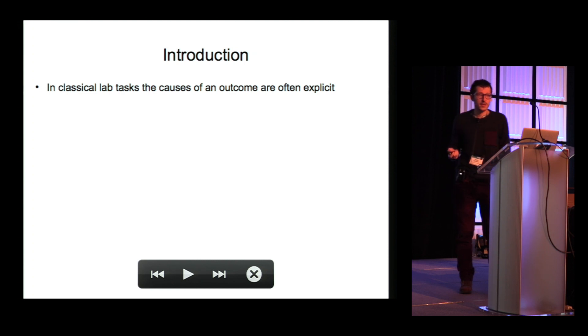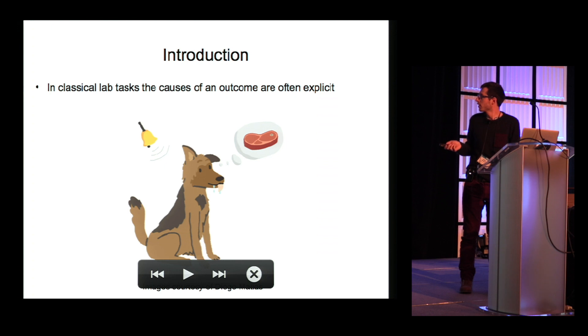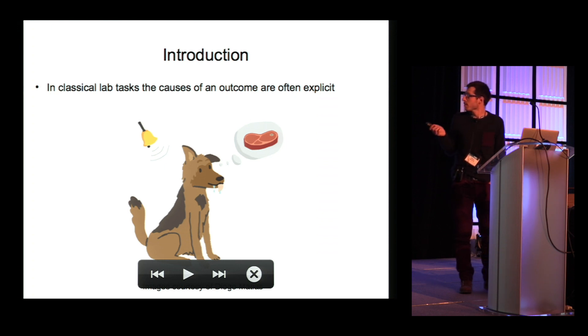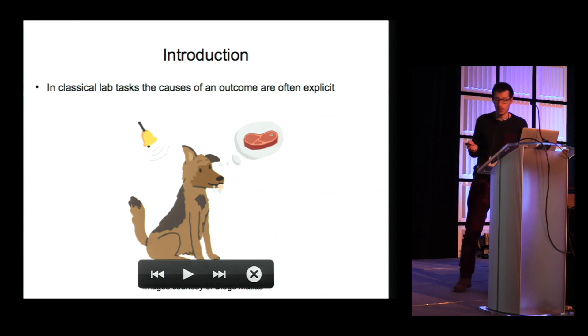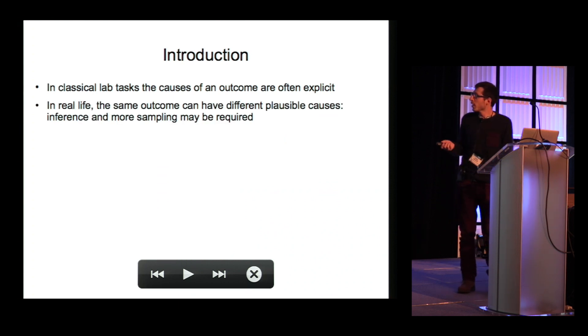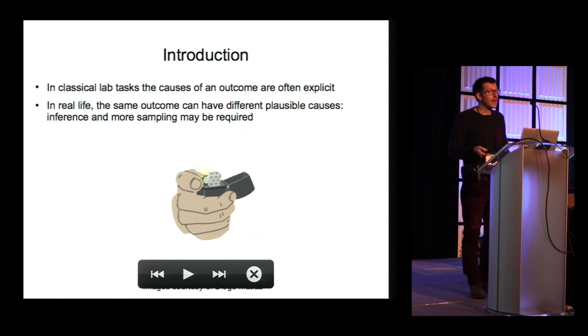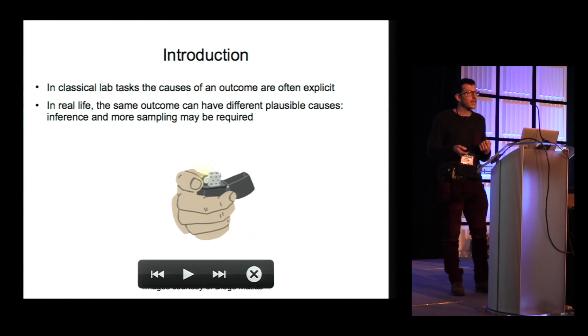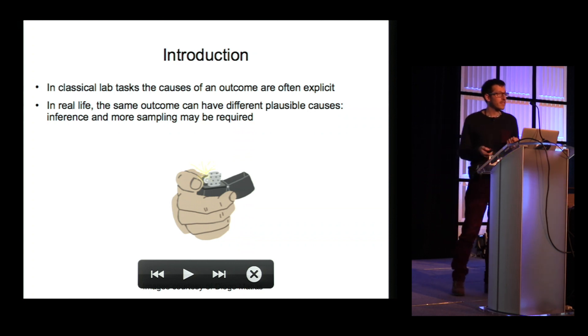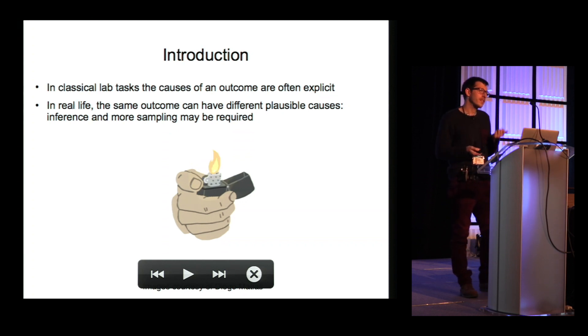In classical lab tasks, like for example Pavlovian tasks, the causes of an outcome are often explicit. For example, if a stimulus is always followed by a reward, it is very easy for the animal to associate value to the stimulus. In real life, however, the same outcome could have different plausible causes. For example, let's say that our lighter fails to light. We cannot know whether it ran out of gas, or if more simply, we fail to flick it. But of course, as soon as it lights up, we can be fully sure it still has gas.